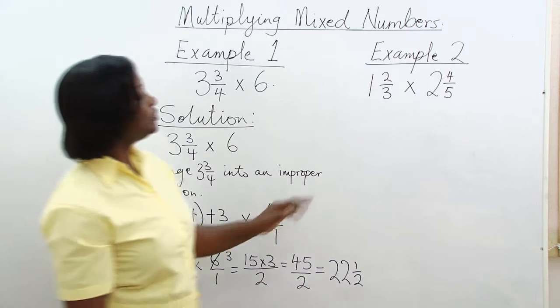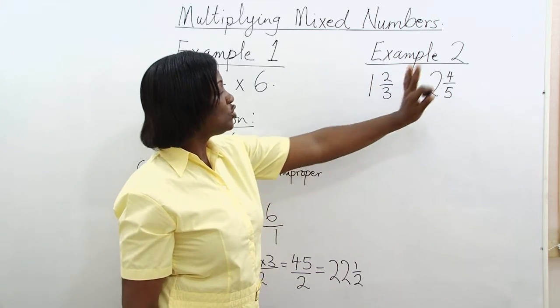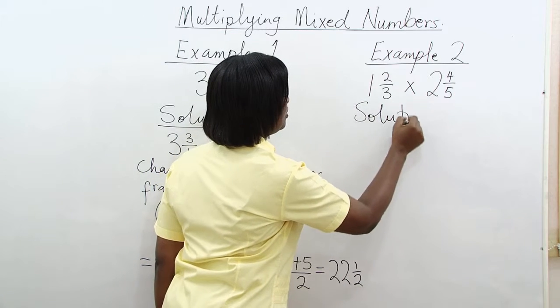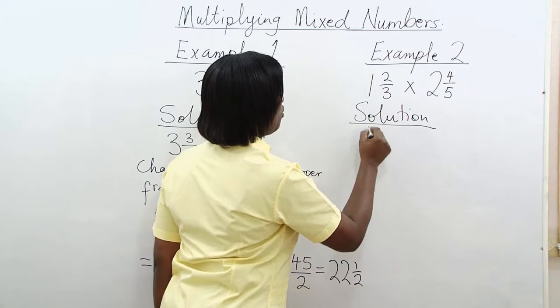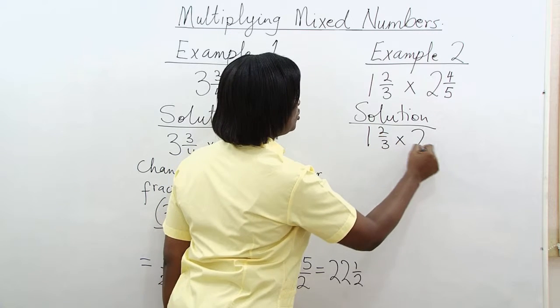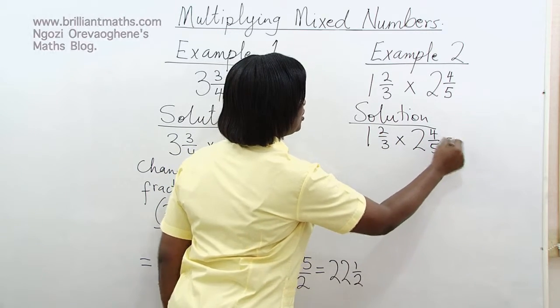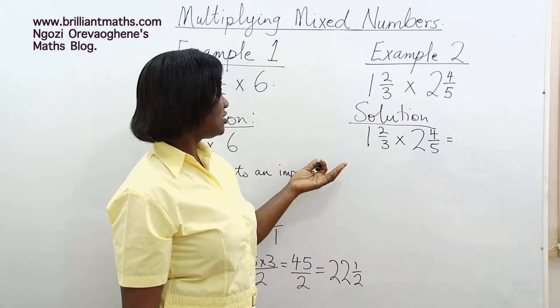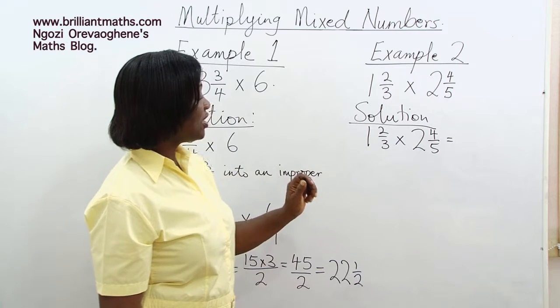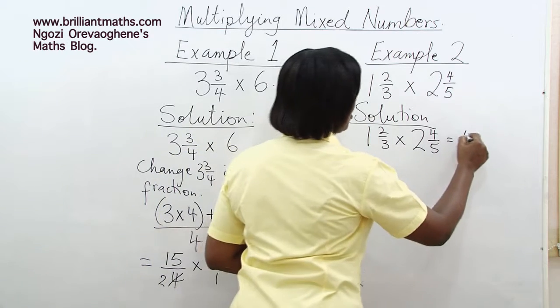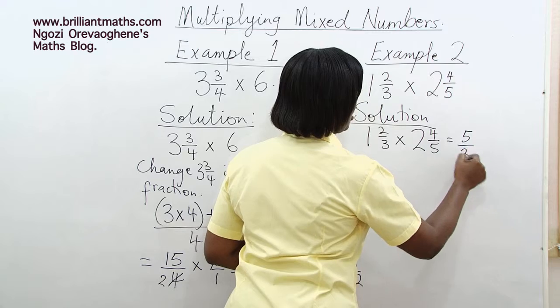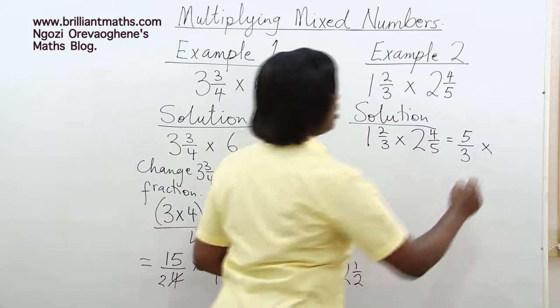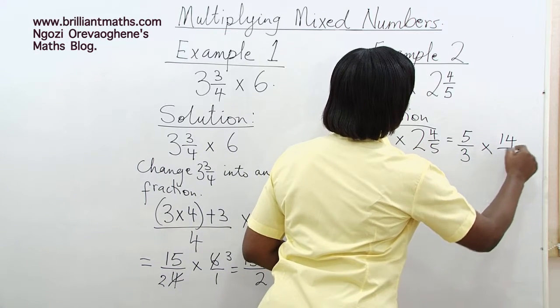Example 2: 1 2 thirds times 2 4 fifths. We change the mixed numbers to improper fractions. 3 times 1 is 3 plus 2, that gives us 5 over 3 times 5 times 2 is 10. 10 plus 4 is 14 over 5.